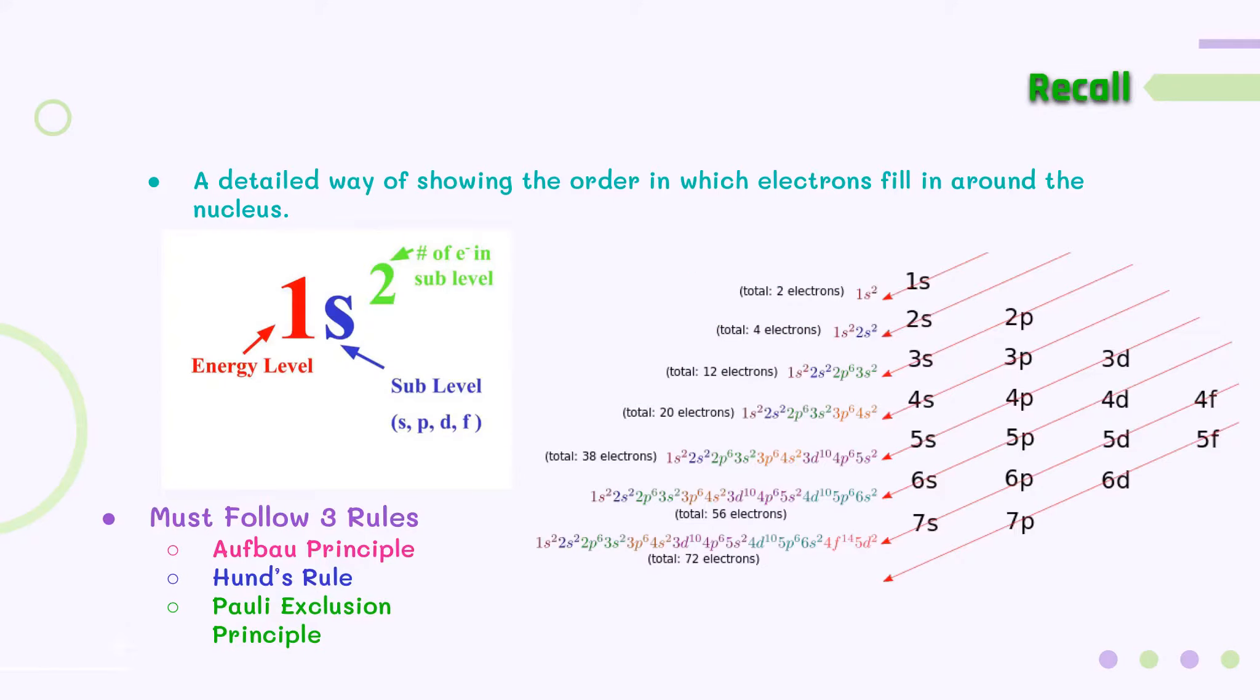Remember from lesson 105, electron configuration is a detailed way of showing the order in which electrons fill in around the nucleus. The number in front is the energy level, the letter is the sublevel (S, P, D, or F), and the exponent is the number of electrons in that sublevel.